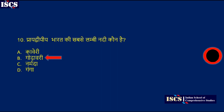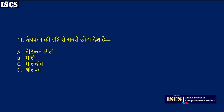Now look at question number eleven: which is the smallest country in the world by area (kshetrafal)? Options are Vatican City, Malay, Maldive, or Sri Lanka. The right answer is option A, Vatican City.